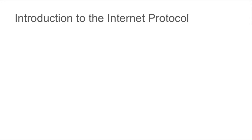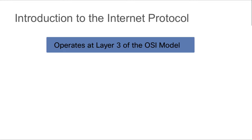The Internet Protocol is an extremely important portion of the TCP/IP protocol stack because it determines where your traffic is going to be routed, and it does this based on the destination address. The Internet Protocol operates at Layer 3 of the OSI model, and it would be considered Layer 2 of the TCP/IP protocol stack — the Internet layer.